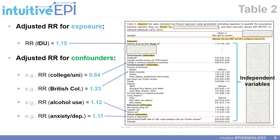Going back to the example Table 2, we are displaying a single multivariable model with an adjusted risk ratio for the exposure of interest — injection drug use — where the adjusted risk ratio is 1.15. We also have adjusted risk ratios for all the confounding variables included in this model. While we know IDU is the exposure and all the other variables are confounders, from a statistical perspective, all these variables are referred to as independent variables.